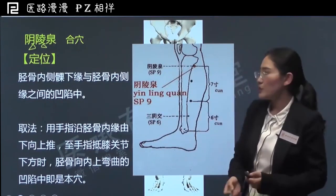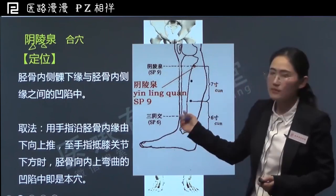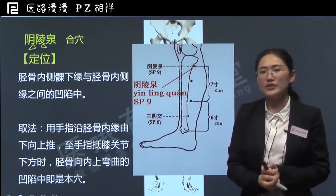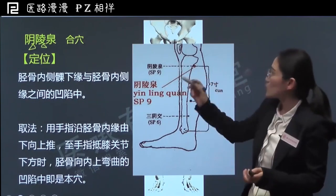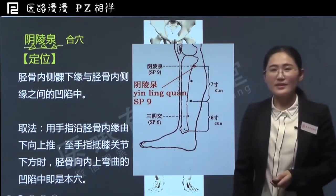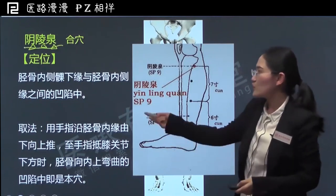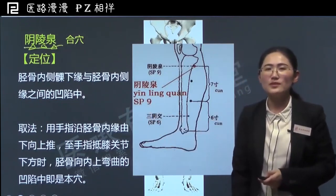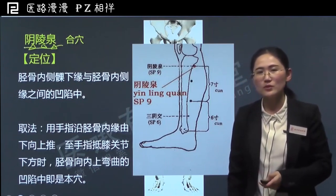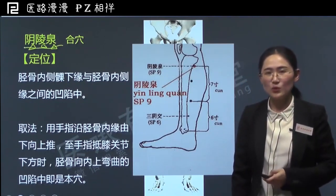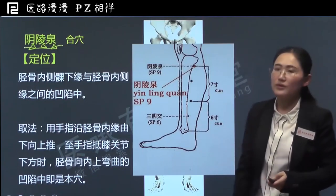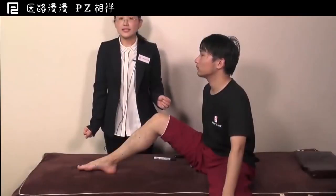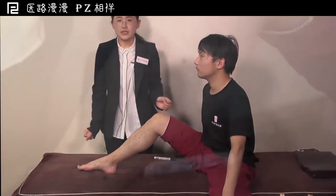灵有丘陵、隆起的意思。阴陵泉位于胫骨内侧髁下缘这个地方，胫骨内侧髁本身是一个凸起，所以在凸起之下。接下来学习阴陵泉的定位：它位于胫骨内侧髁下缘与胫骨内侧缘之间的凹陷中。接下来在真人身上演示如何找到阴陵泉。